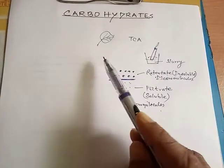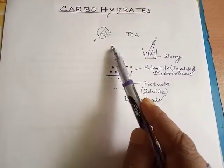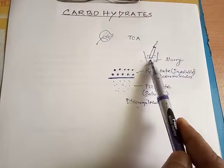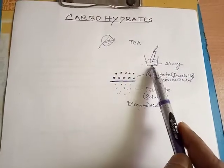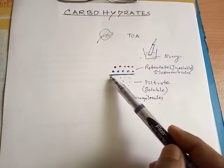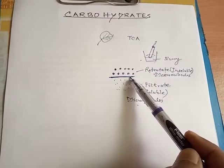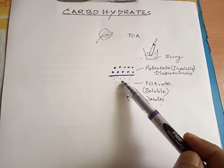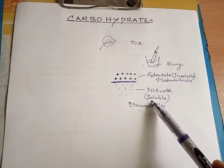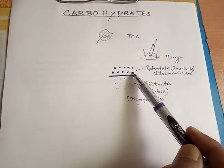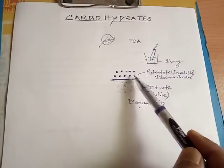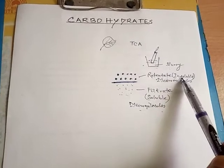We had taken a leaf tissue which was ground in a mortar and pestle with the solvent trichloroacetic acid to form a thick slurry, which was then filtered with the help of a cheese cloth or cotton cloth. The part which passed through was called the filtrate, also referred to as the acid soluble substance, whereas the part which did not pass through was called the retentate, which is the acid insoluble fraction.